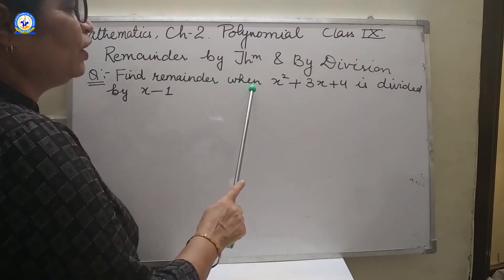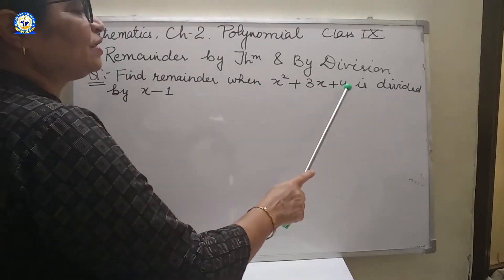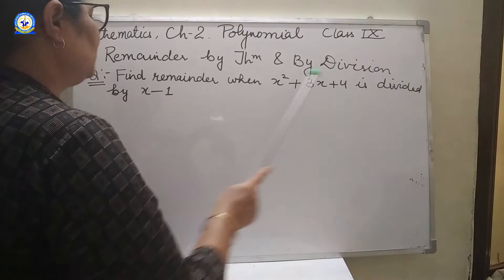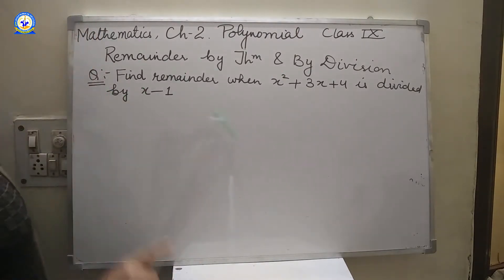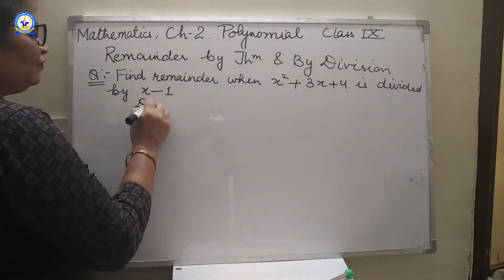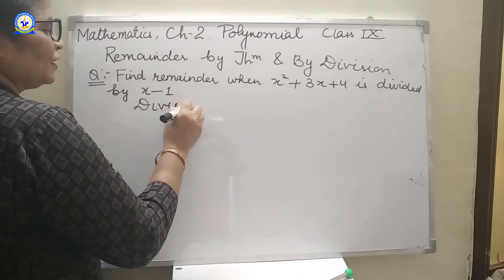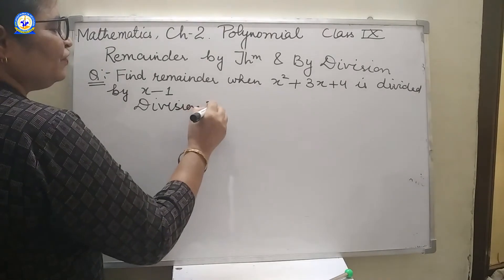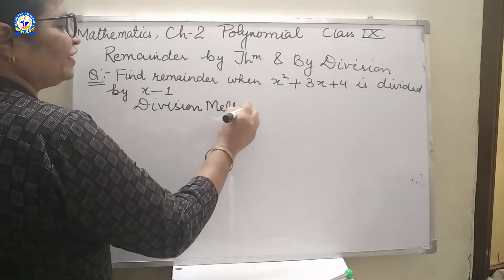Find remainder when x square plus 3x plus 4 is divided by x minus 1. First I will do by division method. Kids, you have done this division method in your 8th standard also.